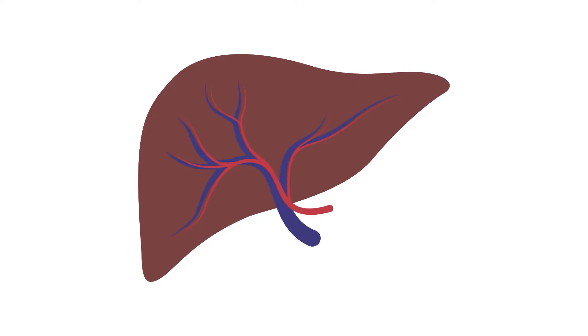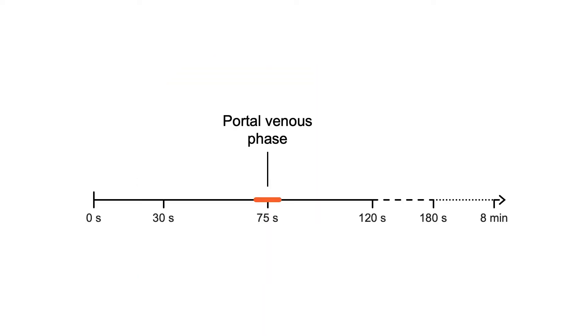We will begin our review of the solid organs with the liver, evaluating the tissue and vasculature. The portal venous phase provides the best balance of solid organ and vascular enhancement for general imaging, and is the most common type of CT performed.